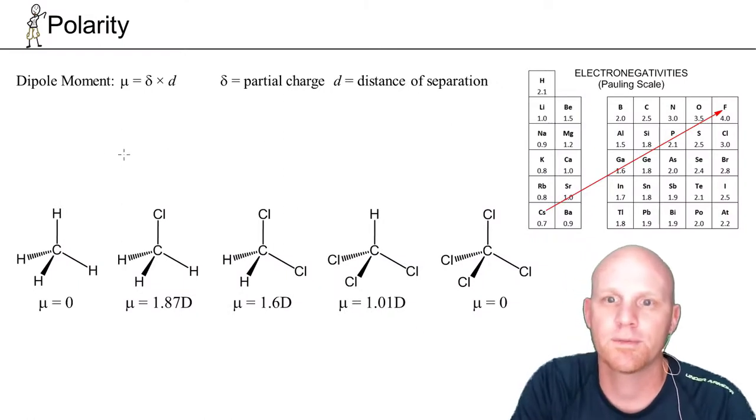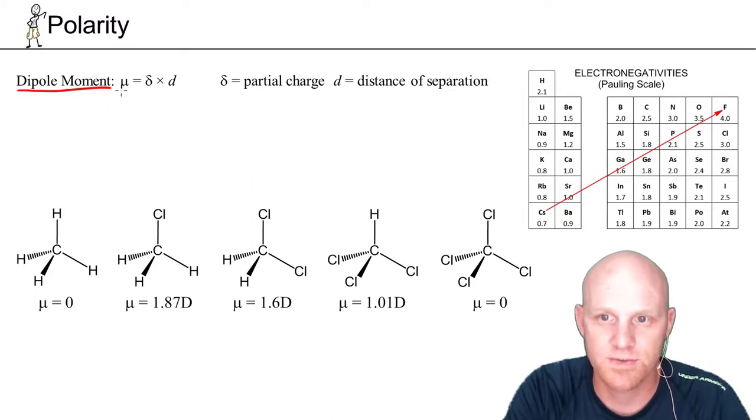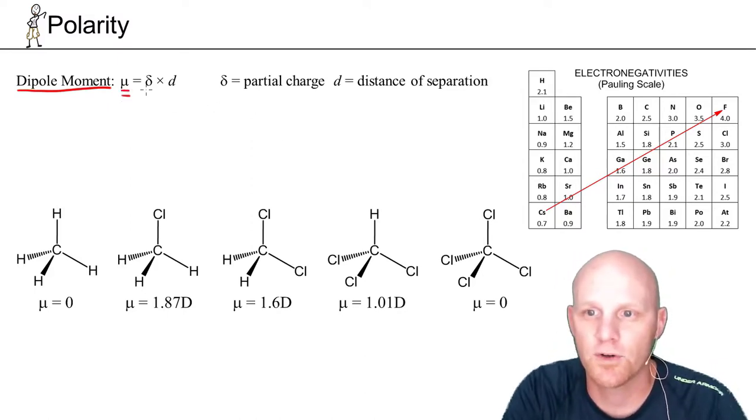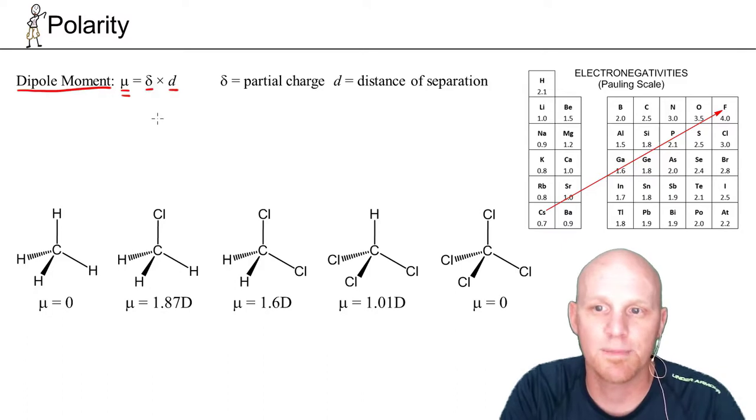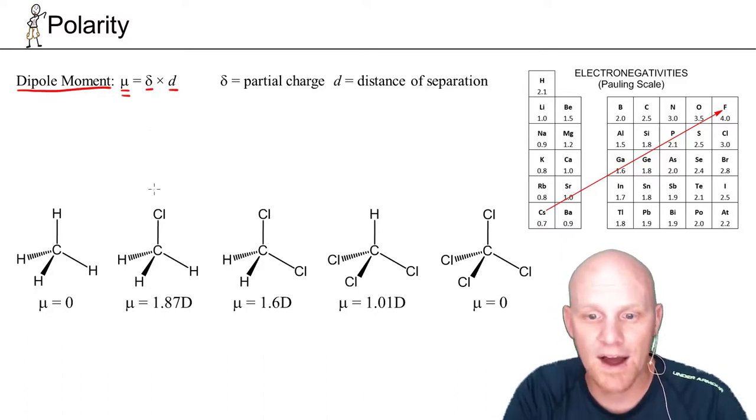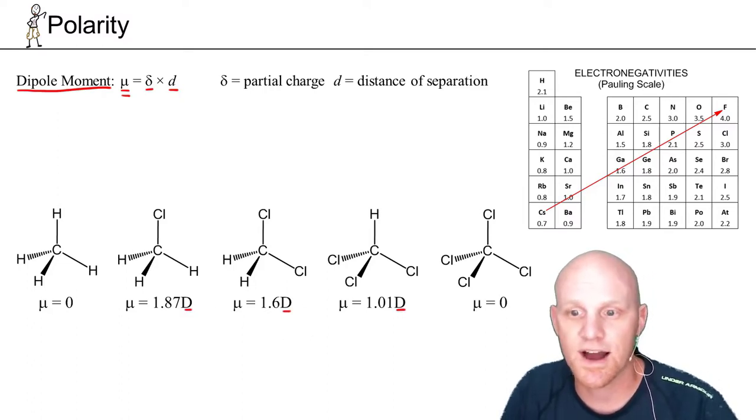And while we're talking about polarity here, we should definitely talk about what's called the dipole moment. Symbolized with the Greek letter mu here. It turns out it's the multiplication, the product of the partial charges of the two atoms, times the distance of separation, that gets you a dipole moment. In this case, it's measured in units of what we call the debye with a capital D. We'll see some of those units down here on some of these molecules. The units are not the most important thing, but you should realize that a higher dipole moment means a more polar molecule.